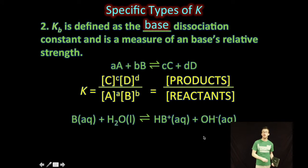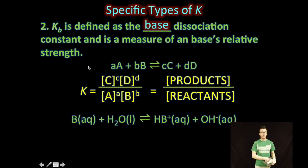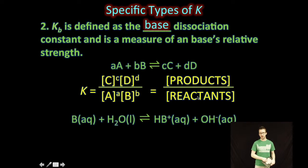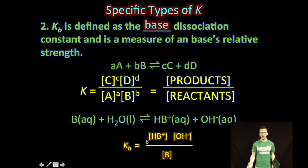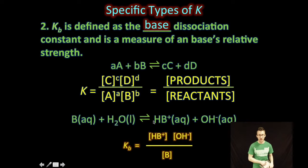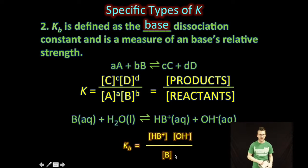We also have Kb, the base dissociation constant, which is a measure of a base's relative strength. When we place a base in water that sets up an equilibrium reaction, we write the base dissociation constant — a specific type of equilibrium constant. The subscript 'b' tells us we're dealing with an equilibrium situation where a base is placed in water. Again, it's a ratio of product concentrations to reacting concentrations.